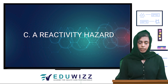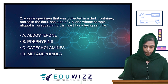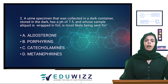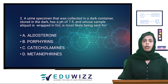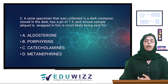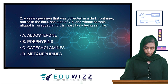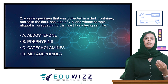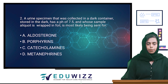The next question: a urine specimen was collected in a dark container and stored in the dark. It has a pH of 7.5, and the sample aliquot is wrapped in foil. What is it most likely being sent for? The options are aldosterone, porphyrins, catecholamines, and metanephrines. The answer is B — porphyrins.